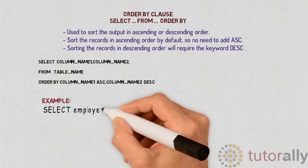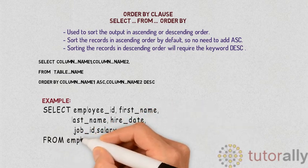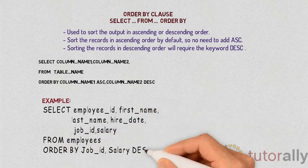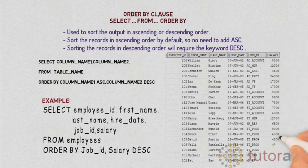For example: SELECT employee_id, first_name, last_name, hire_date, job_id, salary FROM employees ORDER BY job_id ASC, salary DESC.